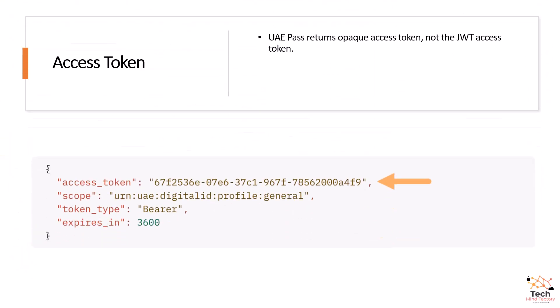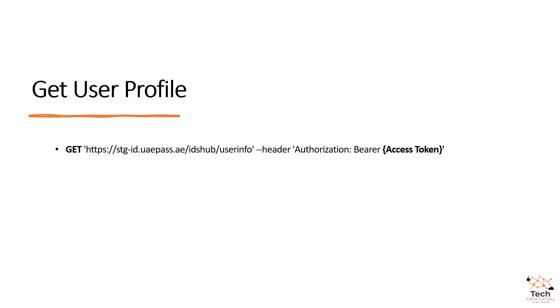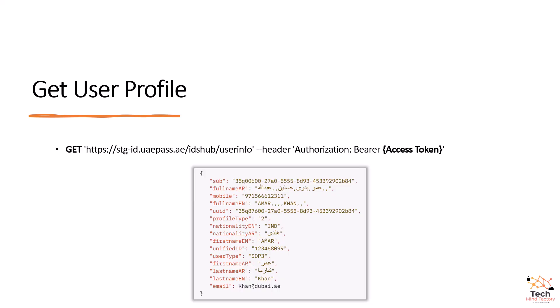However, there is one important fact worth knowing: UAE Pass returns an OPAC access token, not a JSON Web Token. This means the application has to make an additional call to UAE Pass to obtain information about the user profile. The response returned from UAE Pass after successful authentication contains the OPAC token with no user information. So to retrieve information about the authenticated user, we have to call the user info endpoint of UAE Pass with the access token in the authorization header. UAE Pass user info endpoint will then return information about the user profile, including first name, last name, email, phone number, and all other user details.